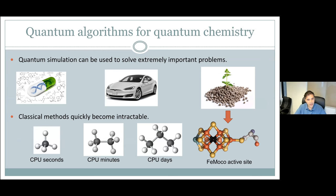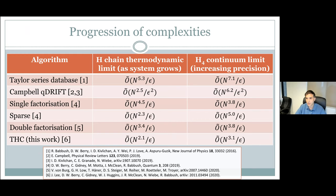Our new method provides the best result for FeMoco as well as the best complexity scaling. The complexity scaling here is in terms of N, which is a very important parameter — this is the number of orbitals. Orbitals are essentially how we represent the system in quantum chemistry. An orbital is basically a spatial pattern for an electron, and when you have many electrons, the state corresponds to each orbital either being occupied by an electron or not.